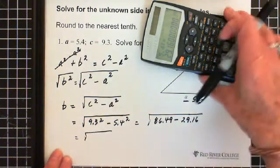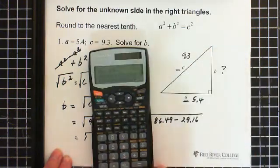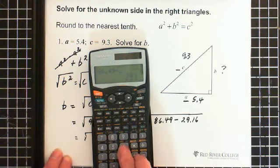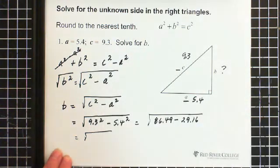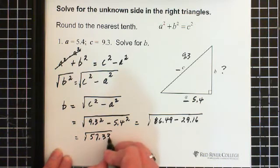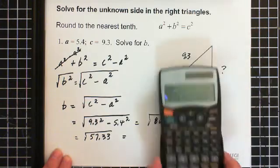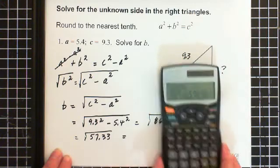I'm going to subtract those numbers. So I have 86.49 minus 29.16 equals 57.33. Now at this point, I take the square root of 57.33. And I end up with 7.57.